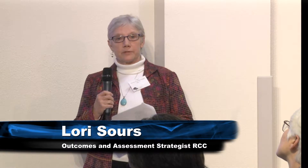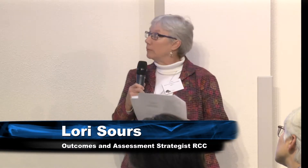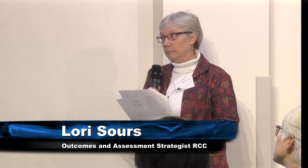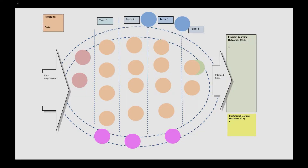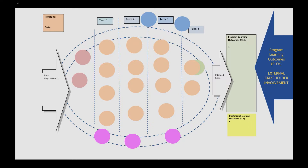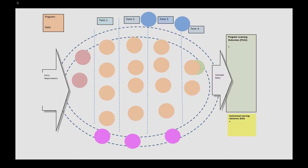As a reminder, this is what the program looks like to students as they're looking at the catalog. This is what our curriculum maps look like, and we're going to be filling in some details as we click through the slides. The inner dotted-line oval represents the core courses in the program. The outer dotted line also includes the electives that are in the program.